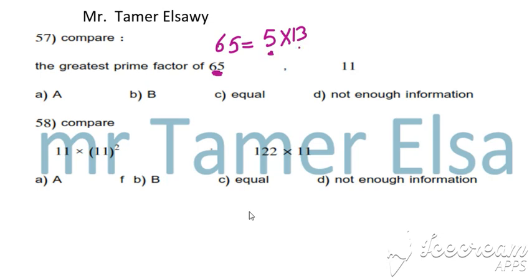5 is prime. 13 is prime. Which is greatest, 5 or 13? 13. 11 is prime. Which is bigger, 13 or 11? 13. So the greatest prime factor of 65 is 13. Answer A.